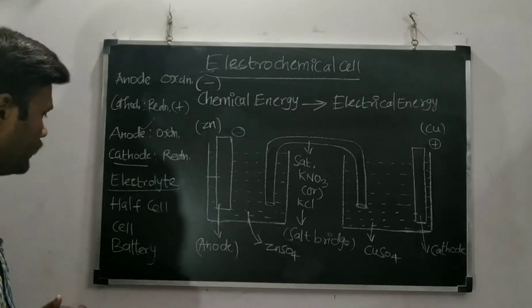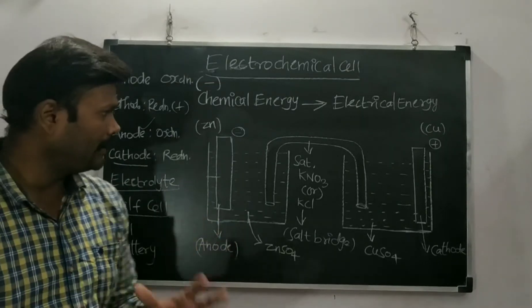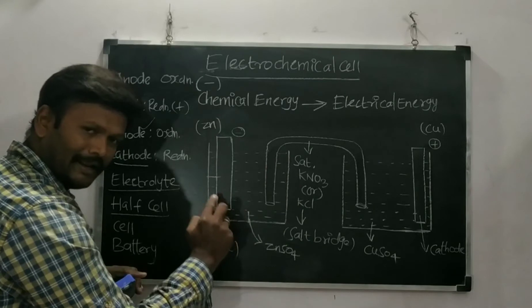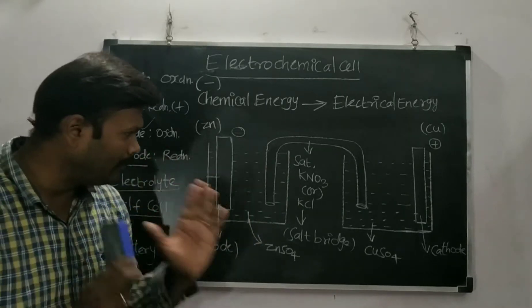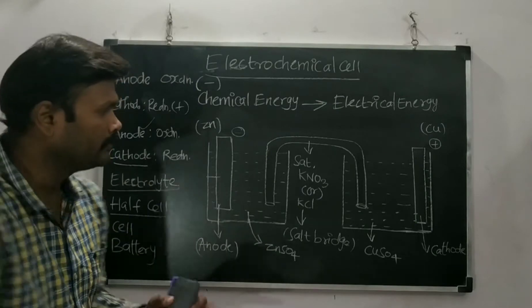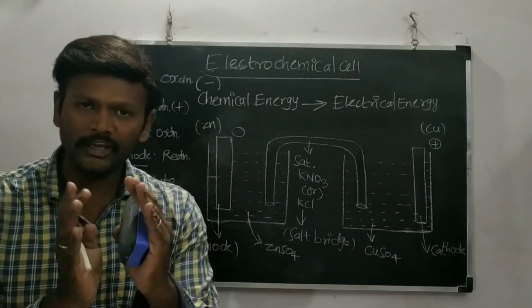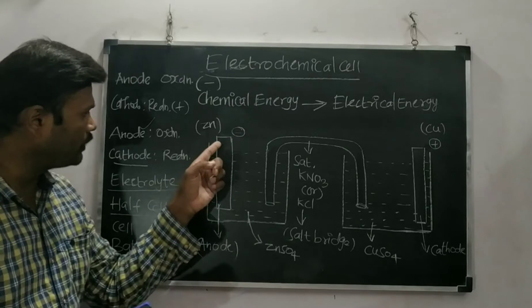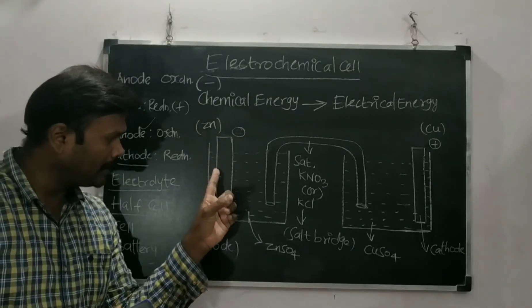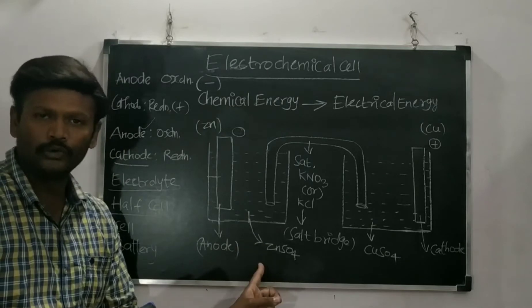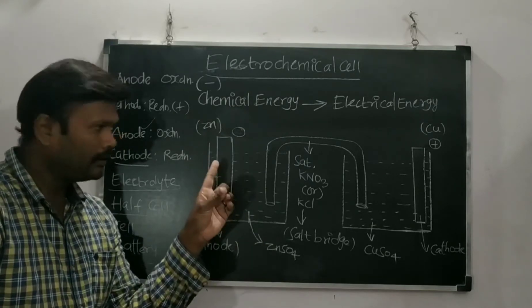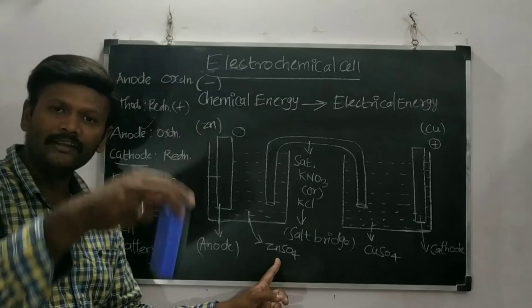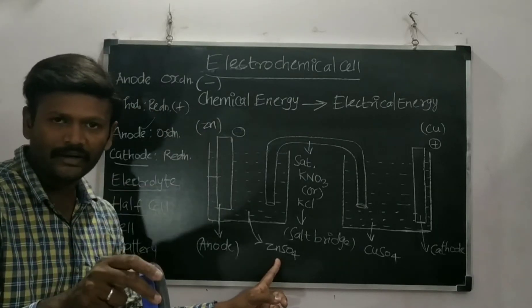What is a half cell? This setup — one beaker consisting of one electrode and one electrolyte — is called a half cell. The total setup is called a cell, so the combination of two half cells produces a cell. A half cell consists of one electrode immersed in its own salt solution. For example, the zinc rod (anode) is immersed in zinc sulfate solution (electrolyte) — that gives a half cell.